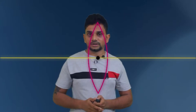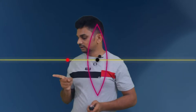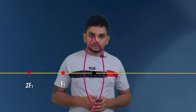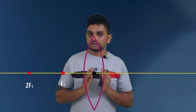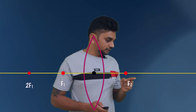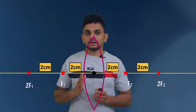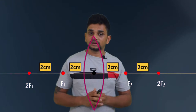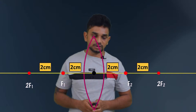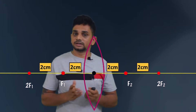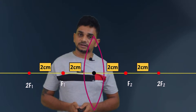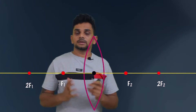Here there is a point — it is optic center O. This point is F1, this point is 2F1. When marking this distance, the distance between the points should be equal. Here you can see F2 and 2F2. I took 2 centimeter distances between all points: between 2F1 and F1 is 2 cm, between F1 and optic center is 2 cm, and between F2 and 2F2 is 2 cm.